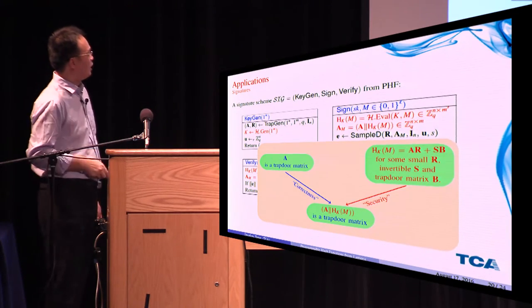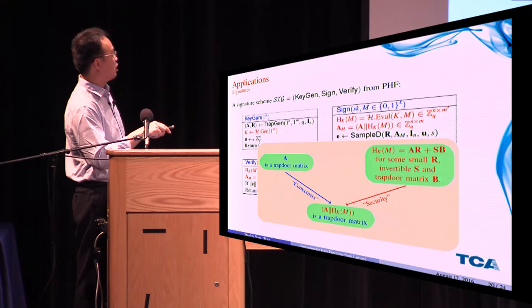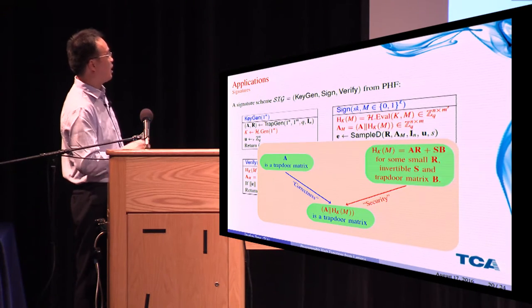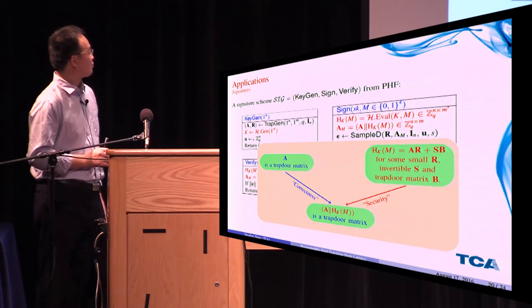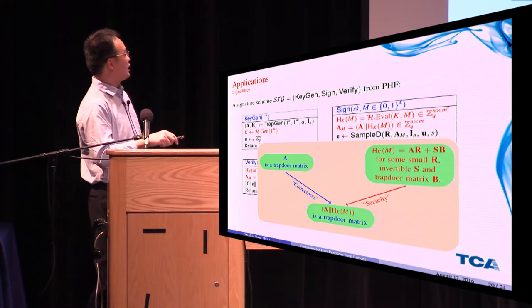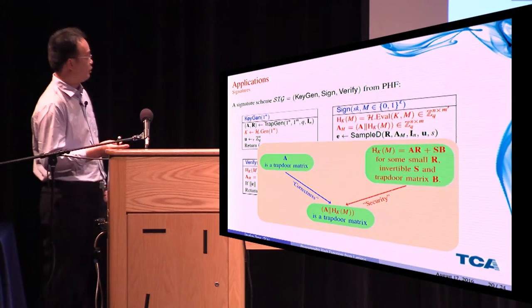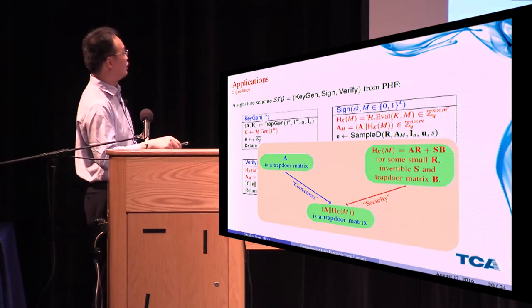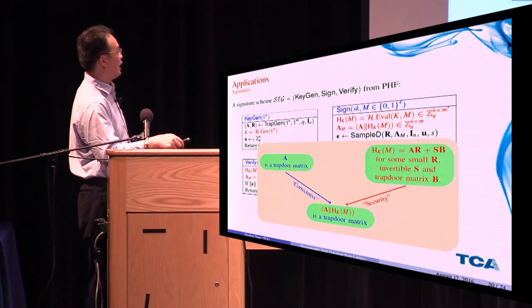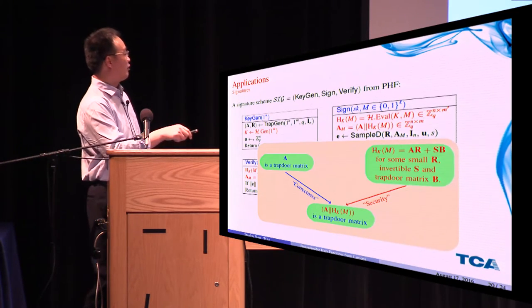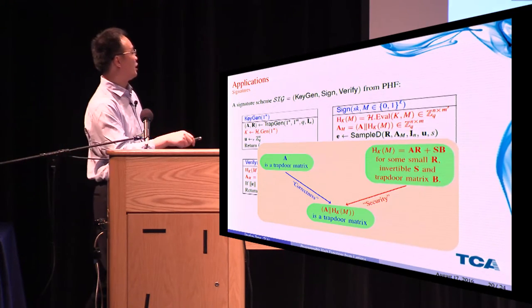And for the security proof, we remember that in our construction in the trapdoor mode, we have that h_K(M) is actually AR plus SB for some small R. And for the signing queries, we have that this S is invertible, so we can generate signatures. And for the forged message, this S is actually zero. Therefore we can solve the inhomogeneous SIS problem using the trapdoor.